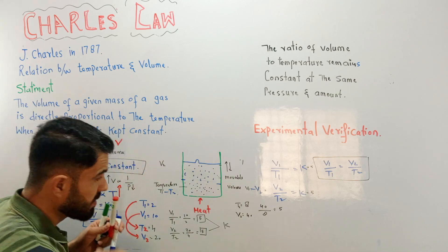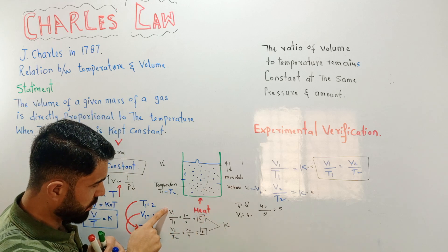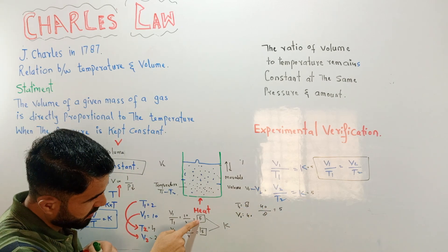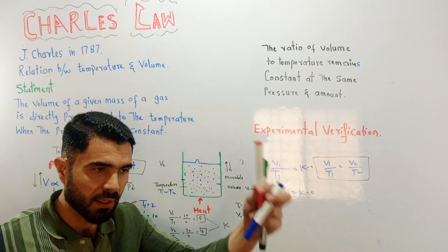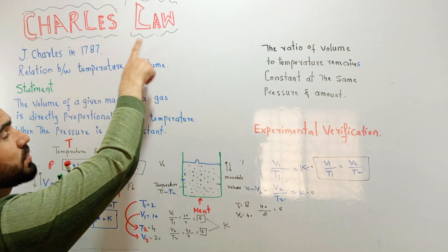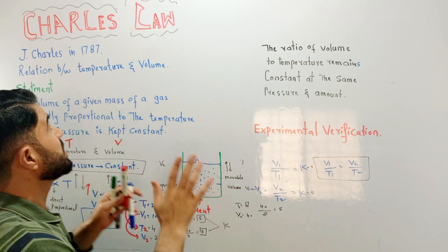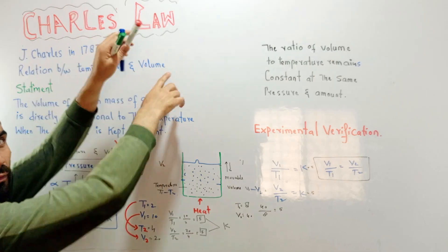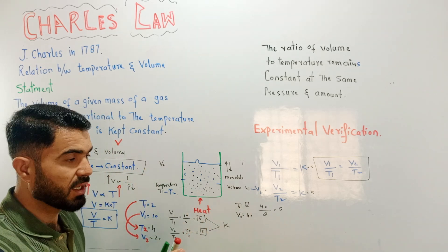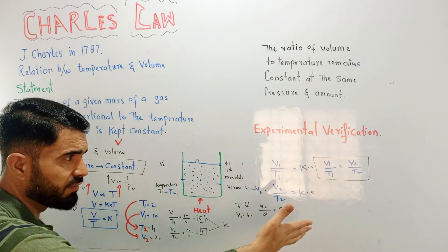From this we derive: V1/T1 = K and V2/T2 = K, therefore V1/T1 = V2/T2. When a numerical problem shows volume and temperature both changing while pressure is constant, it's a Charles's Law problem. Just apply the formula V1/T1 = V2/T2, put in the values, and get your answer.